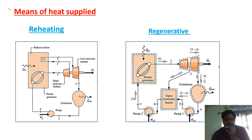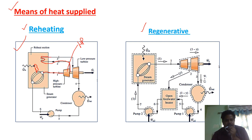The next type of classification is by means of heat supplied. There are mainly two types: reheating and regenerating. In reheating, as you can see in the schematic of the reheating cycle, water in the boiler is converted into steam. That steam enters the high-pressure turbine. After passing through the high-pressure turbine, instead of going to the condenser, it goes to the reheat section where steam is reheated, and then sent to the low-pressure turbine.